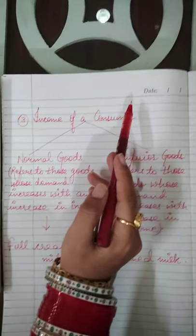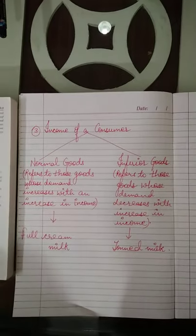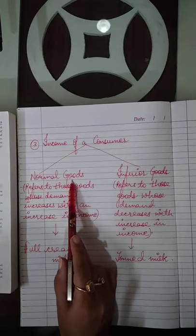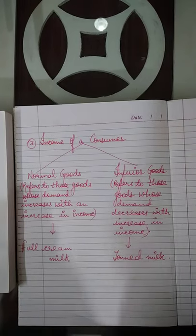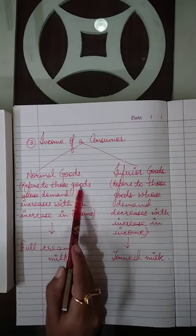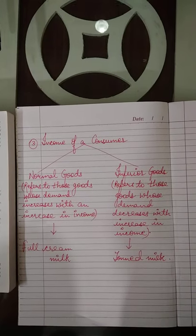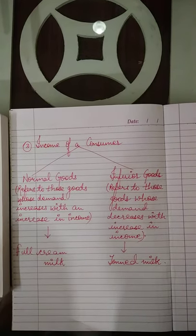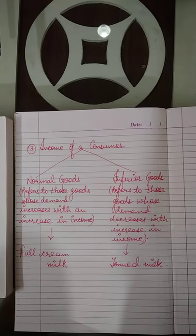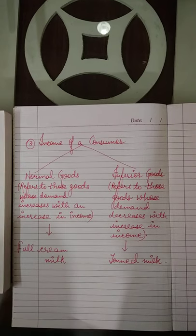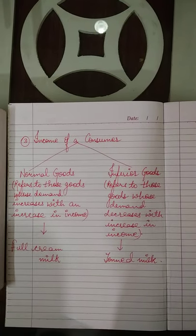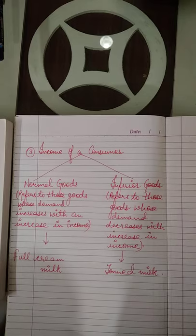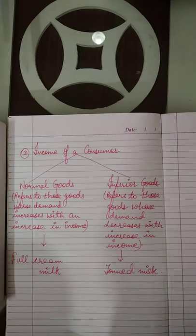Consumer की income से भी demand पर effect पड़ता है। We will study this point with regard to two types of goods: normal goods and inferior goods. Normal goods refer to those goods whose demand increases with an increase in income. जैसे जैसे income बढ़ती है, normal goods की demand भी बढ़ती है। For example, अगर एक person के पास एक छोटी कार है जैसे Maruti 800, और उसकी income बढ़ गई, तो वो obviously एक अच्छे model की कार prefer करेगा।